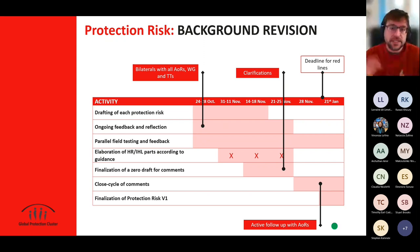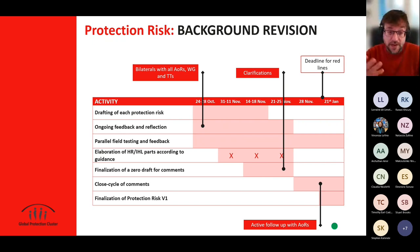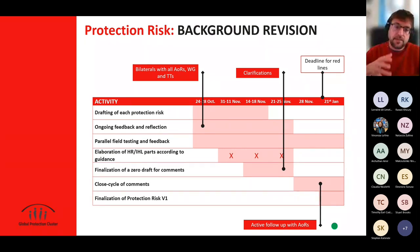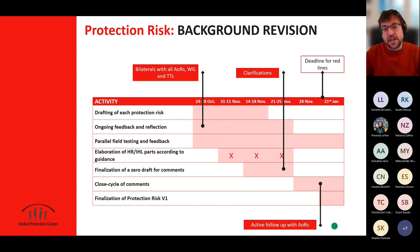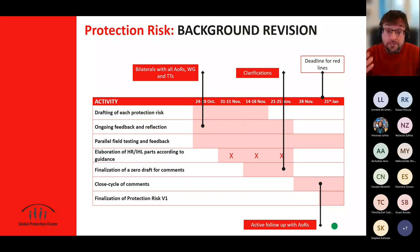We had an overall process that included three rounds of feedback, finished at the end of January. One important aspect is we tried to test out every single step and every single version of the process with operations, to have a sense-checking of whether they made sense in the field and whether they could be usable. The idea for 2023 is to start using them and run a revision at the end of the year, to adjust or change based on use in operations so we can be much more practical.